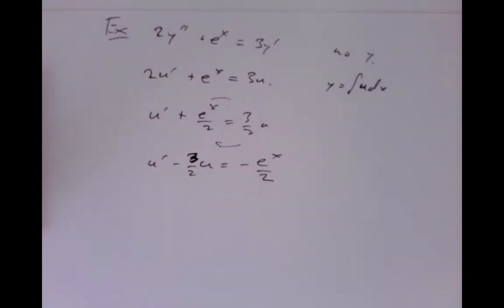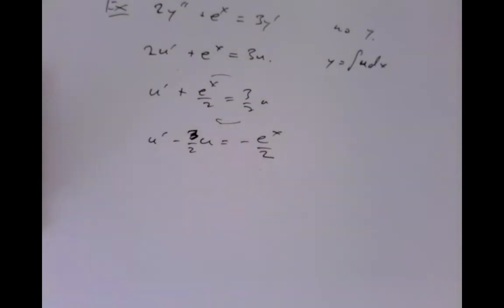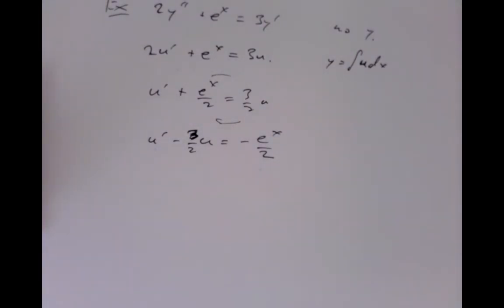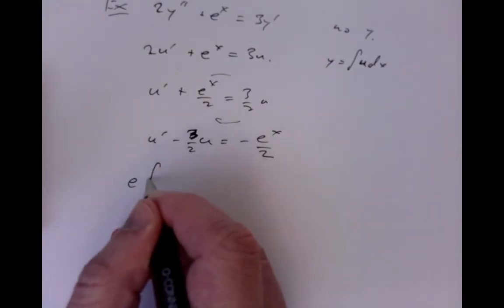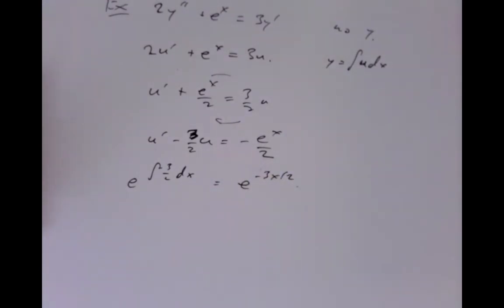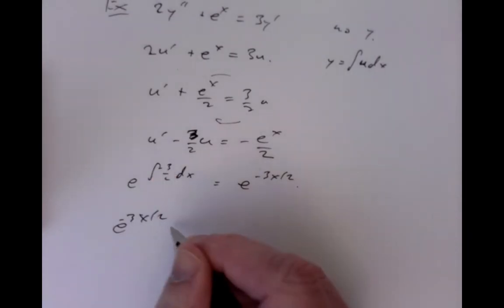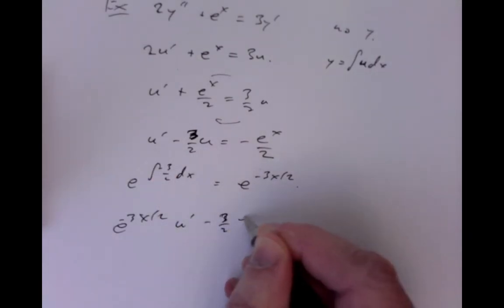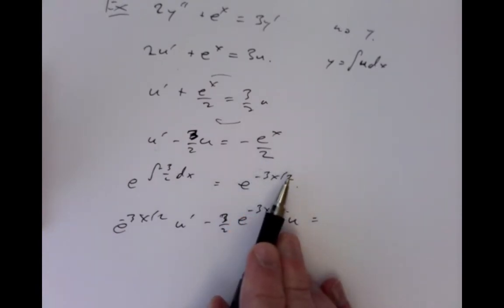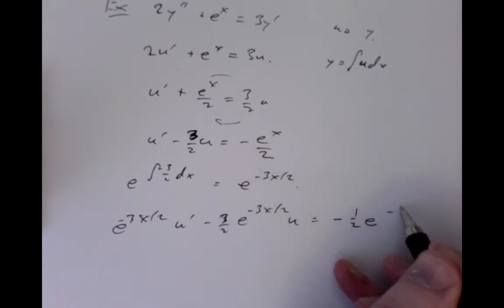So let's try and figure out how we solve this kind of problem. We want an integrating factor, and for this kind of problem we're expecting it should be something like e to the something. So we remember that it should be e to the integral of minus three-halves dx, which is e to the minus 3x over 2. So we multiply both sides by the integrating factor, getting e to the minus 3x over 2 times u prime minus three-halves e to the minus 3x over 2 times u equals minus one-half e to the minus x over 2.